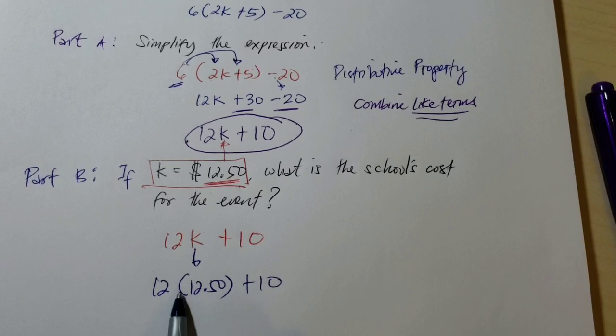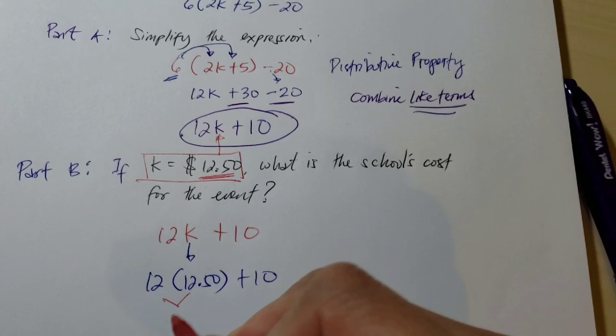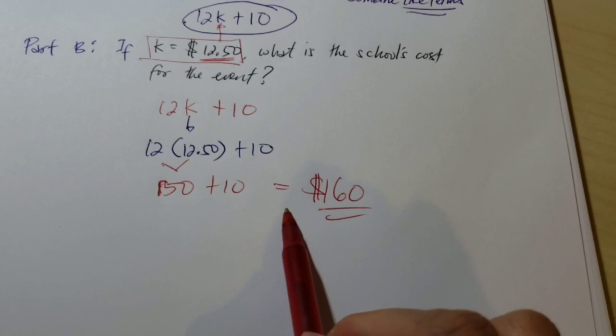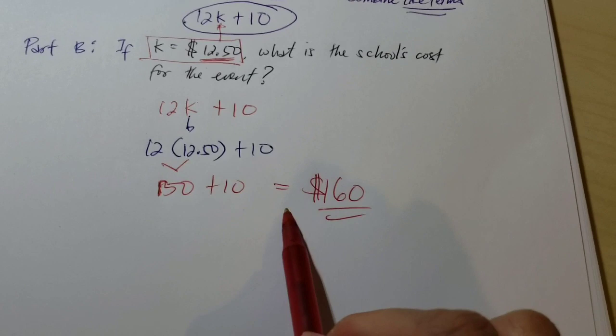We need to multiply 12 times 12.50, and that gives us 150 plus 10. So 150 plus 10 gives us $160 as our answer for Part B.